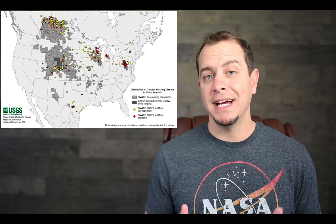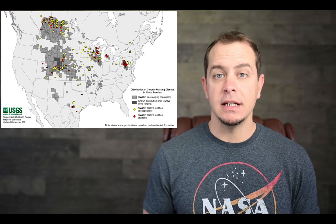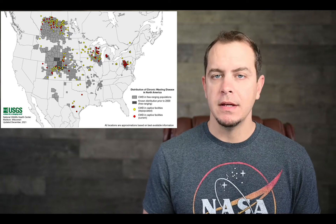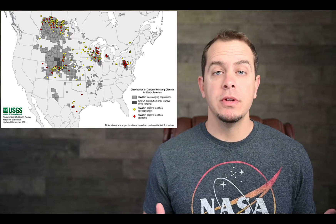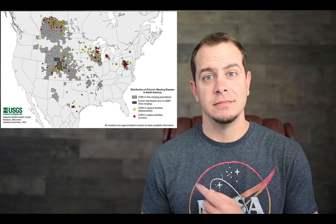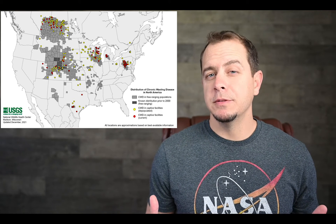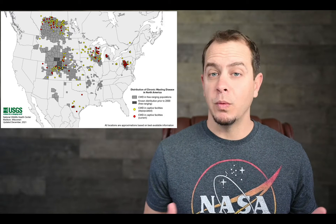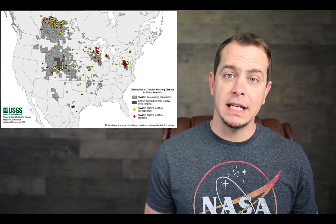Chronic wasting disease was first discovered in the U.S. back in 1967 at a captive deer facility in Colorado, and since then it's spread out through the United States and also Canada. It's currently most pervasive in the upper Midwest, the western Great Plains, and the southern part of Canada.